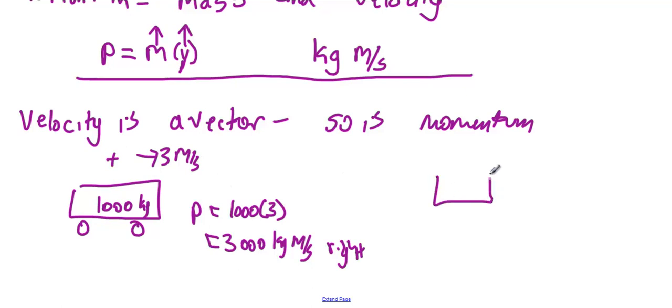If I have another cart, a thousand kilograms moving three meters per second to the left, it also has momentum. But its momentum is negative three thousand kilograms meters per second. So it does make sense to talk about a negative momentum. It does have a direction. It doesn't make sense to talk about a negative mass. You either have mass or you don't.